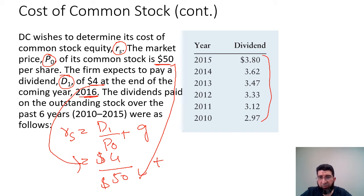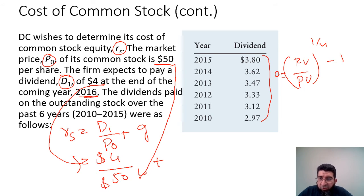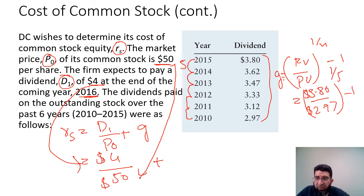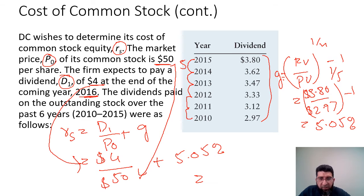The growth rate is calculated using the future value divided by present value method, raised to the power of one over n, minus one. This gives us $2.38 divided by $2.97, raised to one over five (five years), which comes out to approximately 5.05%. Substituting back: RS equals $4 over $50 plus 5.05%, which gives approximately 13.0%.